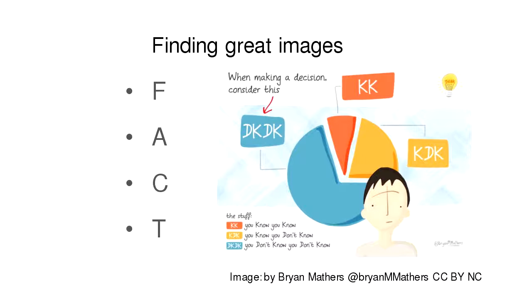This session is focusing on finding great images. We're going to look at four aspects of finding images: finding, attribution, compression, and trying something new. So let's get started.